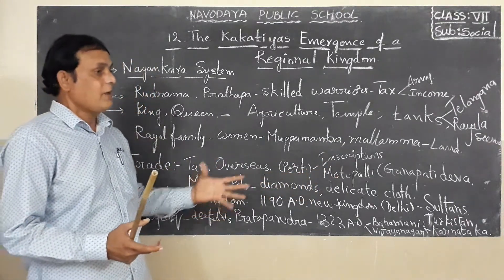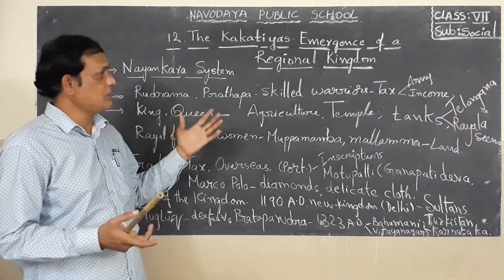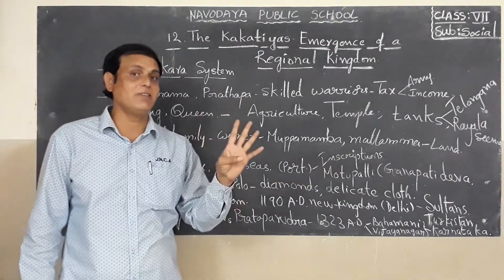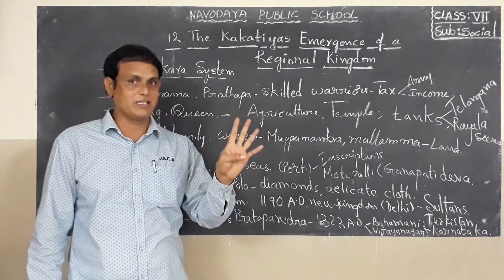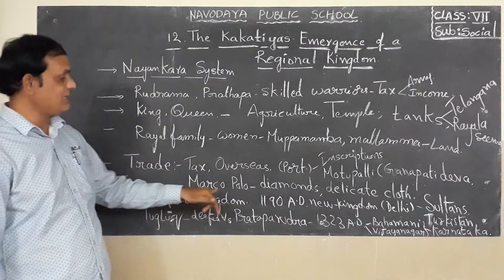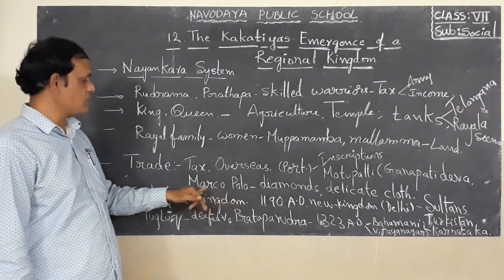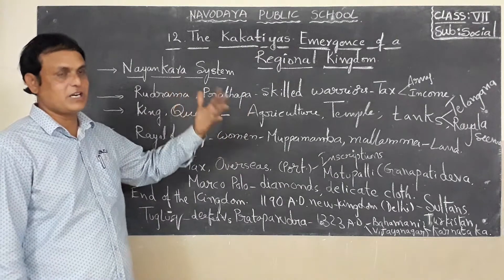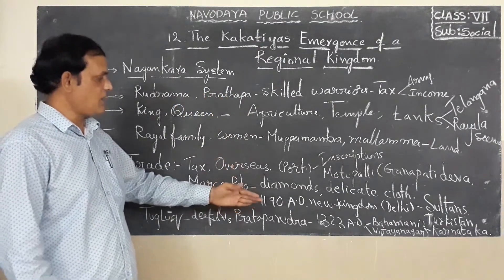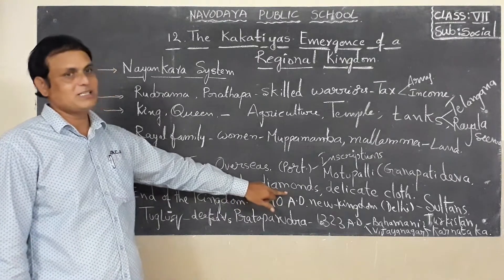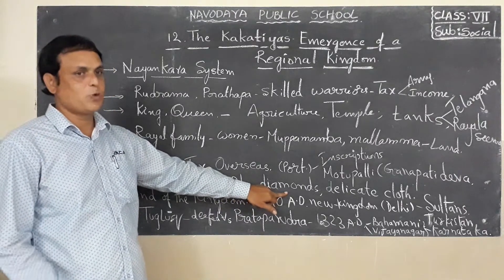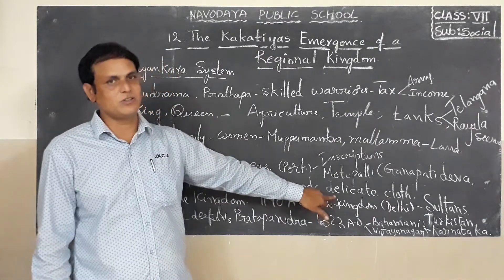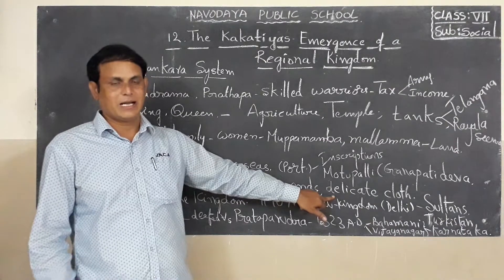We can know about the history of all Kakatiya kings through inscriptions. They encouraged the use of Sanskrit language and also Telugu language. In those days, one Italian traveler named Marco Polo wrote about the kingdom and about the trade. The main goods were diamonds, which are very precious, exported from Motpalli port for profit. Delicate cloth was also one of the important goods exported from the Kakatiya kingdom.